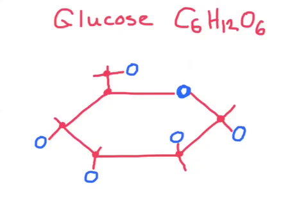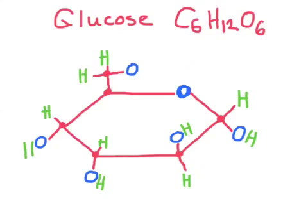Finally, we need to locate our twelve hydrogen atoms throughout the glucose ring structure. I'm pointing to each one on the diagram. The most common mistake people make is they forget this chemical bond here, and the last hydrogen is attached at that point.